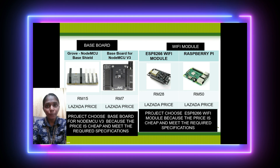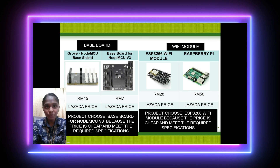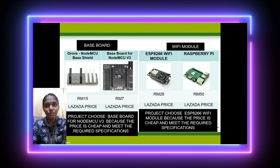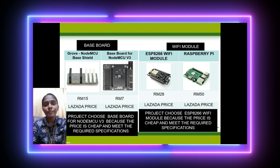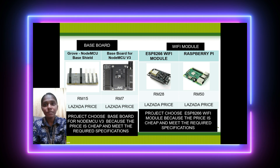For comparative components, there are two types: base board and WiFi module. For the NodeMCU base board, the first type is the Grove NodeMCU base shield at RM15, and the second is the base board for NodeMCU v3 at RM7, based on Lazada pricing. This project uses the NodeMCU v3 base board because it is cheaper and meets the required specifications.